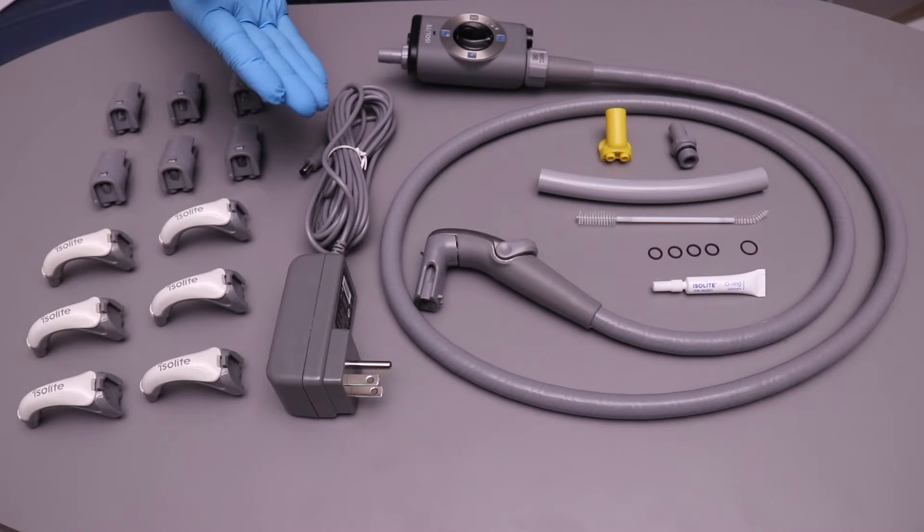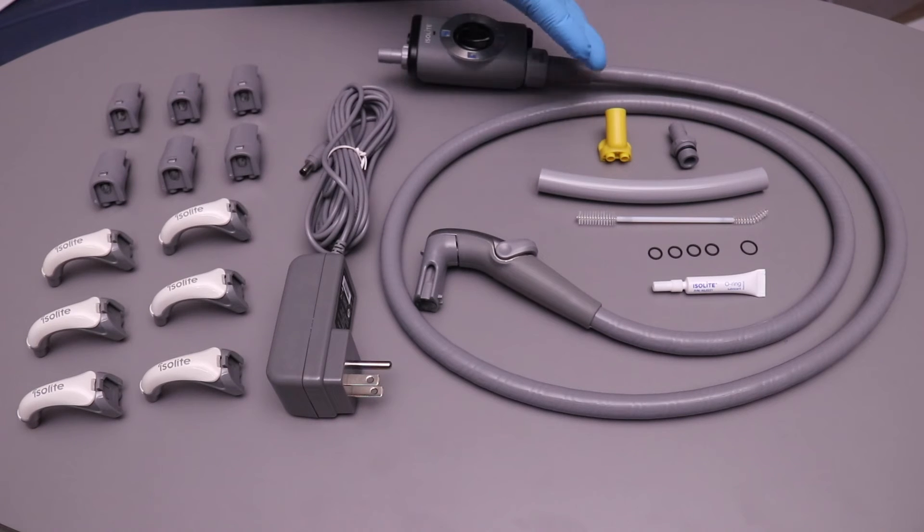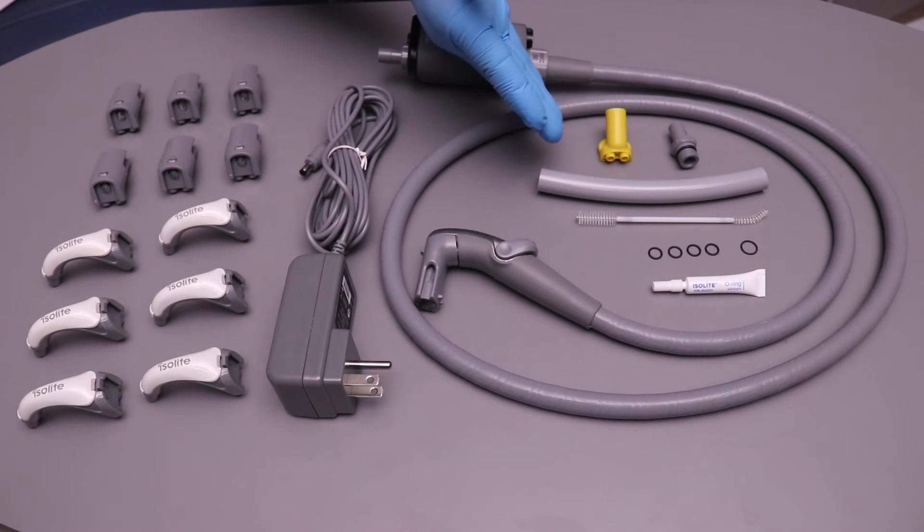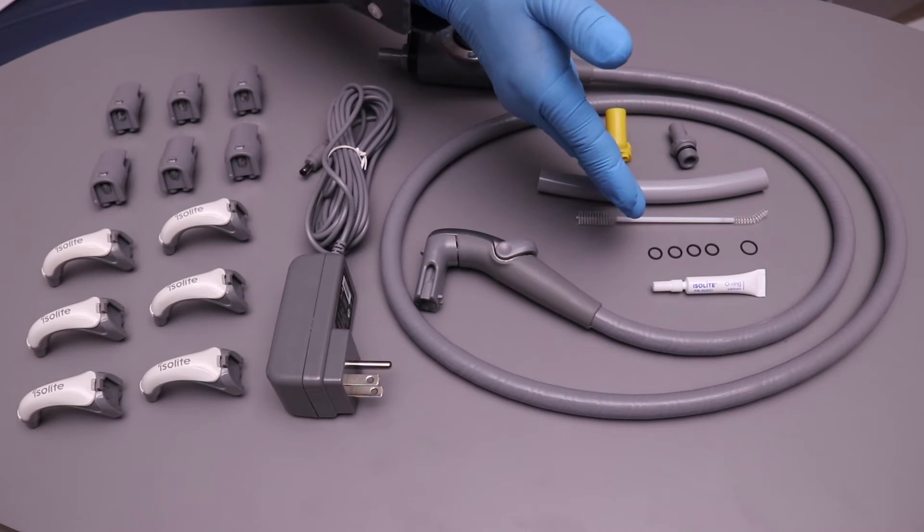There's a power supply, and it also comes with a cleaning tip, a barb fitting for an additional hose if you want, 6-inch HVE tubing, double-ended cleaning brush, and O-ring kit.